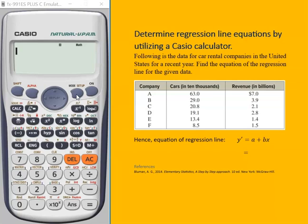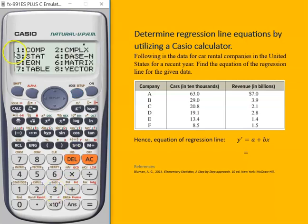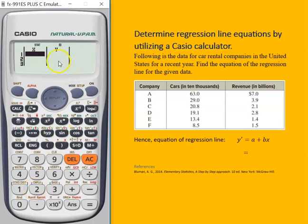First of all, we take a statistic mode which comes under three, then linear equation. And here we'll plug in the values: 63, 29.8, 19.21, 13.4, 8.5.